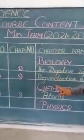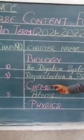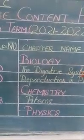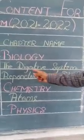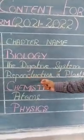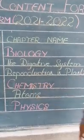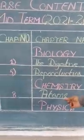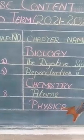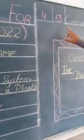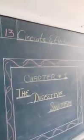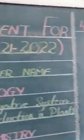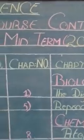Your science book is divided into three portions: biology, chemistry, and physics. In biology, we will study two chapters in midterm session: the digestive system and the reproduction system. In chemistry, we will study only one chapter, which is chapter number 8, and its name is Atoms. In physics, we will study chapter number 13, Circuits and Electrical Currents. This is the course of content which we will study in midterm session.